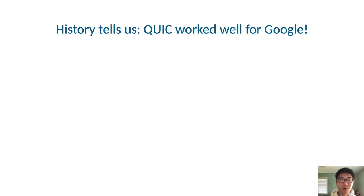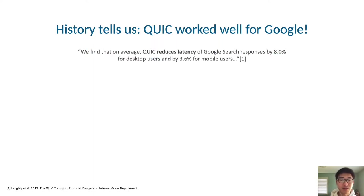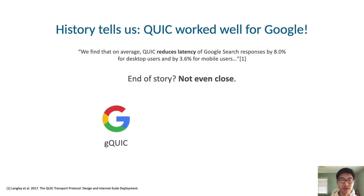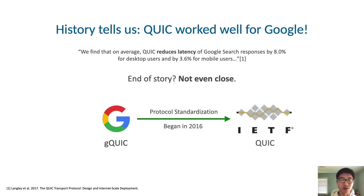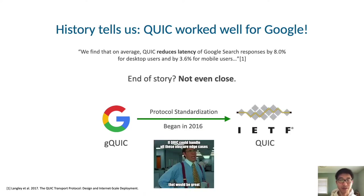History tells us that QUIC worked well for Google. In 2017, Google published results after deploying QUIC for a number of years, showing that QUIC led to significant improvements in end-user latency for their search platform. However, Google's QUIC was their own protocol — it wasn't standardized and had a very broad specification that few other organizations tried to replicate. So in 2016, Google introduced QUIC to the IETF in order to standardize the protocol. The thing is, QUIC standardization does not necessarily equate to a standardization in performance, because QUIC is implemented in user space and most content providers choose to use their own QUIC implementation. Thus, it is not a given that content providers who adopt QUIC will achieve the same performance improvements that Google did.